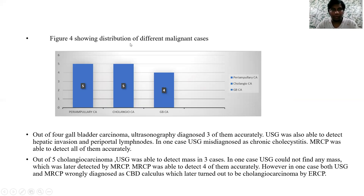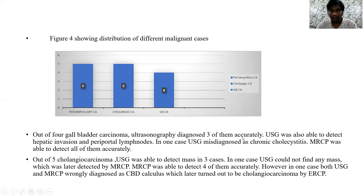Figure 4 shows the distribution of different malignant cases. There were 5 cases of periampullary carcinoma, 5 cases of cholangiocarcinoma, and 4 cases of gallbladder carcinoma. Out of 4 gallbladder carcinoma cases, USG diagnosed 3 of them accurately. USG was also able to detect hepatic infiltration and peripotal lymph nodes. In one case, USG misdiagnosed as chronic cholecystitis. MRCP was able to detect all of them accurately.